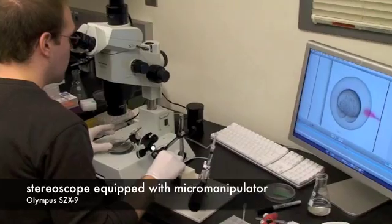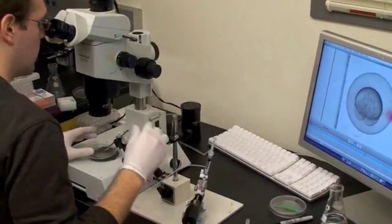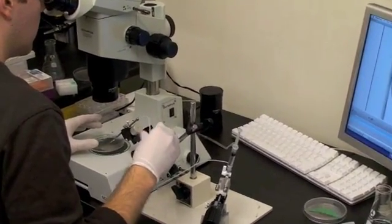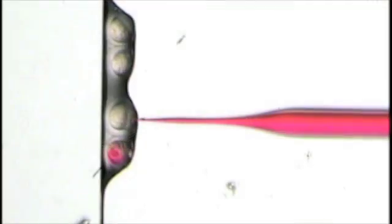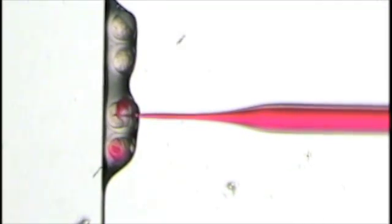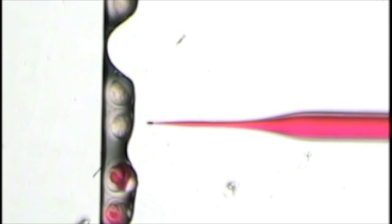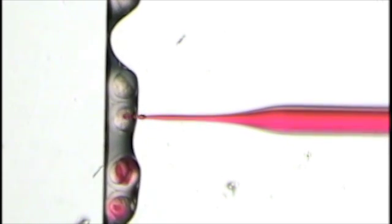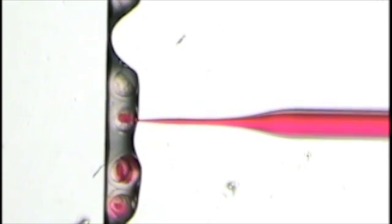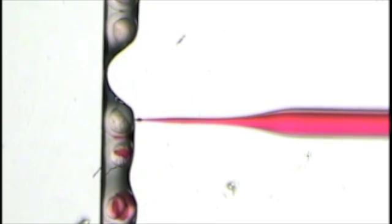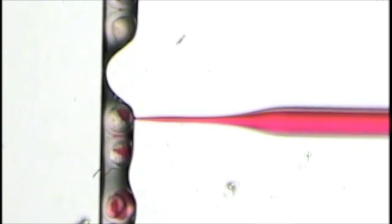The zebrafish embryos must be injected quickly as a rapid succession of cell divisions occur within an hour after fertilization. We must work quickly and with steady hands. The engineered DNA must be carefully injected through the protective chorion and into the relatively small cell that sits above a massive mound of yolk.